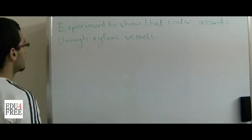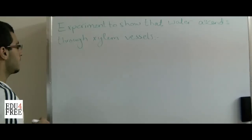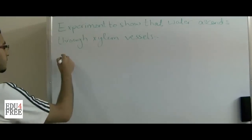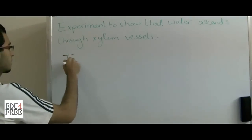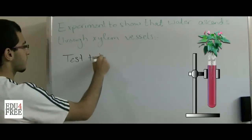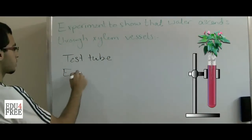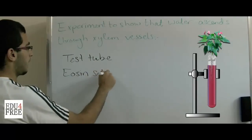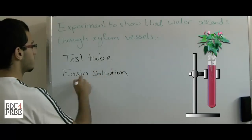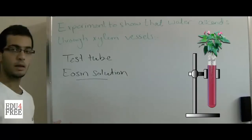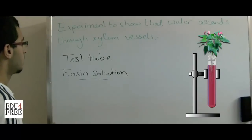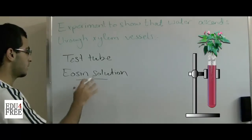Accordingly, the first thing that we are going to need is a test tube filled with eosin solution. Eosin solution is a solution of colored water, let's say pink colored or a color near to pink.